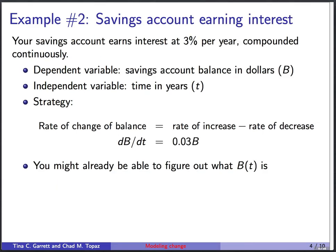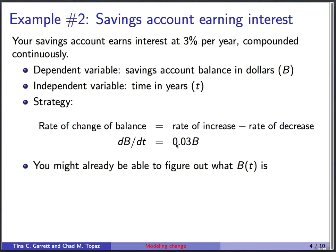Example two is a savings account earning interest. Your savings account earns 3% per year, compounded continuously. The dependent variable is your balance, measured in dollars — we'll call it b — and the independent variable is time in years. Rate of change of your balance is rate of increase minus rate of decrease. The increase is 3% of your balance, which is 0.03b. There's no decrease, so we get db/dt equals 0.03b.